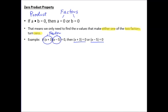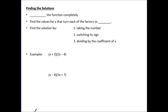We're now ready to use factoring to find the solutions of a quadratic equation. First we factor the function completely, then we find the values for x that turn each factor to zero. To find those solutions, we follow three quick steps: take the number out of the parentheses, switch its sign, and divide by the coefficient of x if there is a coefficient other than one.